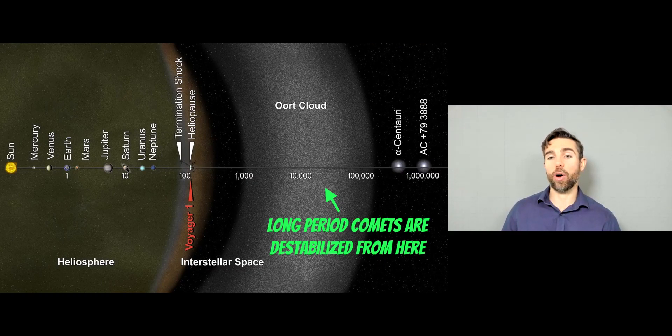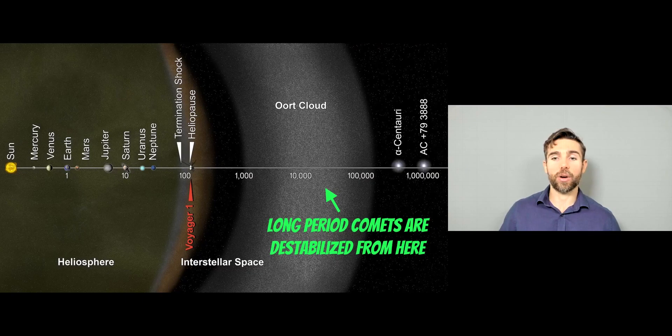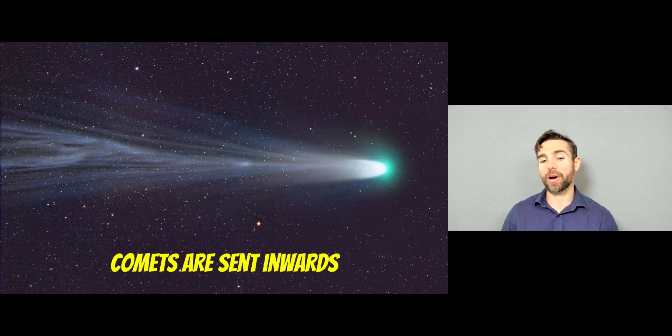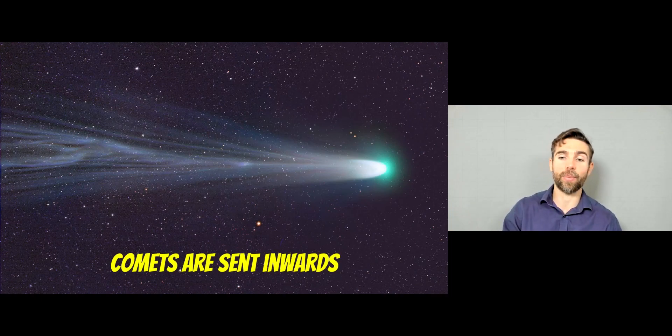And long period comets are going to originate from this Oort cloud. It's this spherical structure around the sun comprised of these kind of comets. And they can get destabilised and sent inwards. So a lot of the long period comets that we see now, or have seen in the past, have originated from the Oort cloud and have likely been destabilised from stars passing very close or just passing past the solar system. And they've exerted a small gravitational force on these objects, which has slightly knocked their orbits and then sent them inwards.